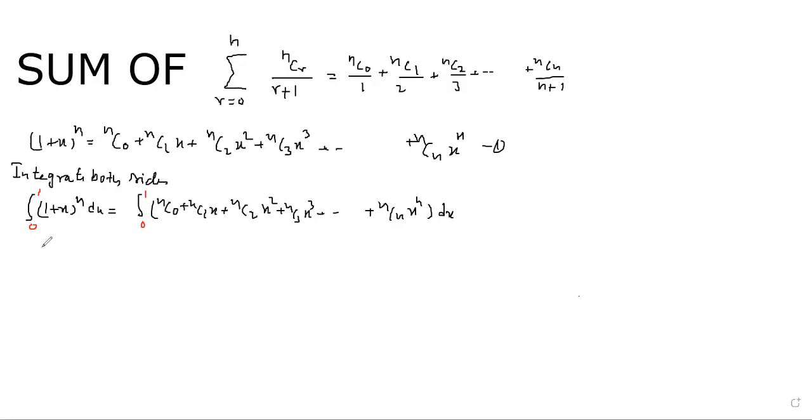How do we do this? This is integration of 1 plus x to the power n plus 1 upon n plus 1, and we take limit from 0 to 1. And we take limit from nC0x plus nC1x square by 2 plus nC2x cube by 3, nC3x power 4 by 4, plus nCnx power n plus 1 upon n plus 1.